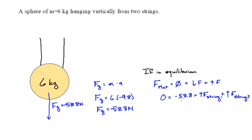If I take 58.8 and divide it evenly between string one and string two, I find that equals 29.4 plus 29.4.